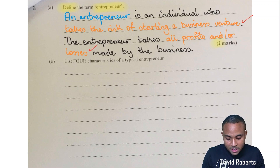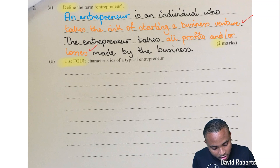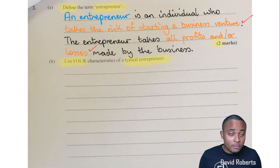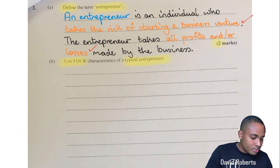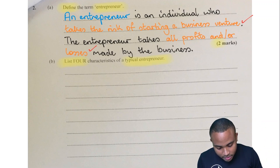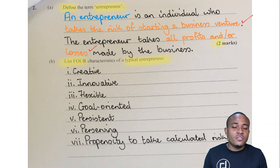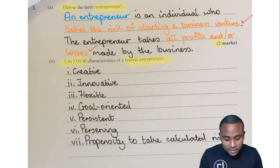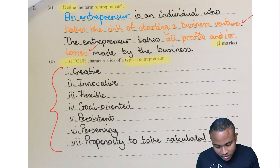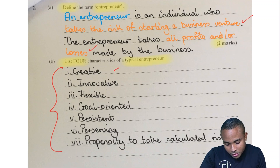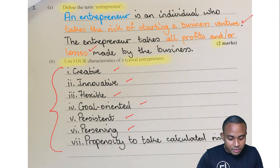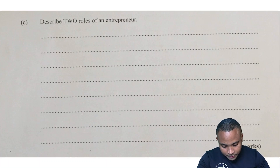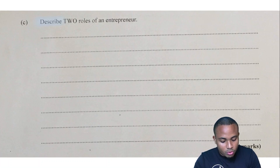Part b: list four characteristics of a typical entrepreneur for four marks. We're just going to go straight down giving the list, and this comes straight out of your syllabus. I listed seven but they asked for four, so give any four. From the syllabus: they must be creative, innovative, flexible, goal-oriented, persistent, persevering, and have a propensity to take calculated risk.